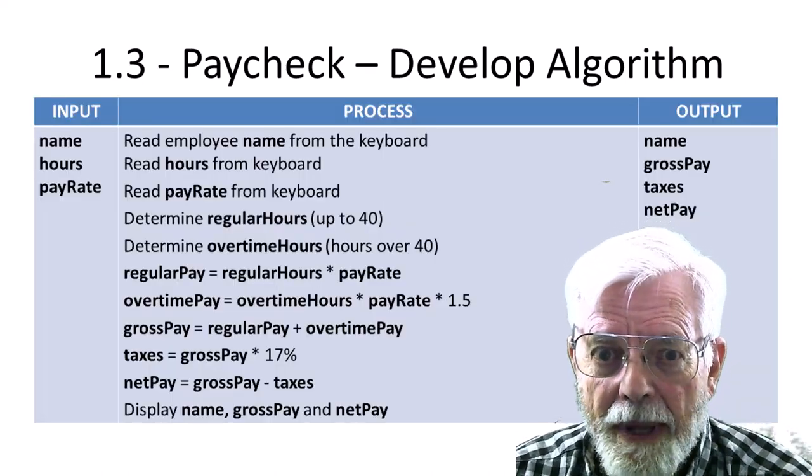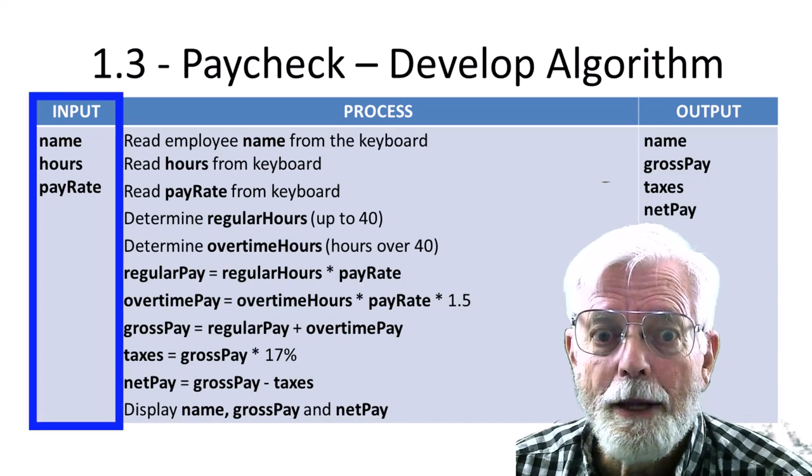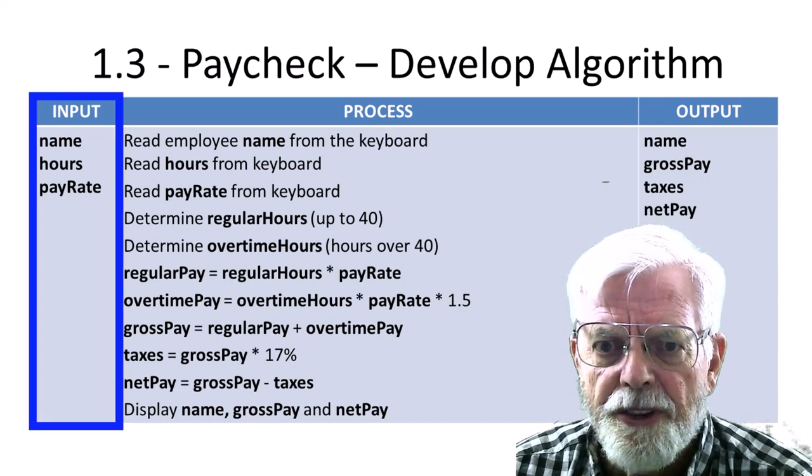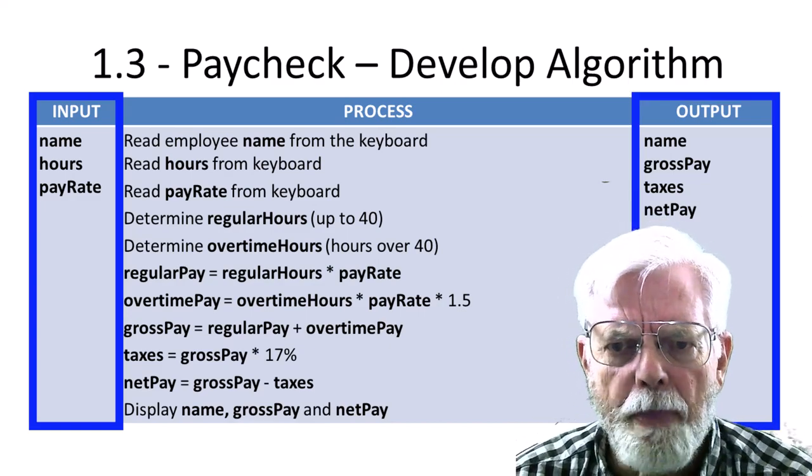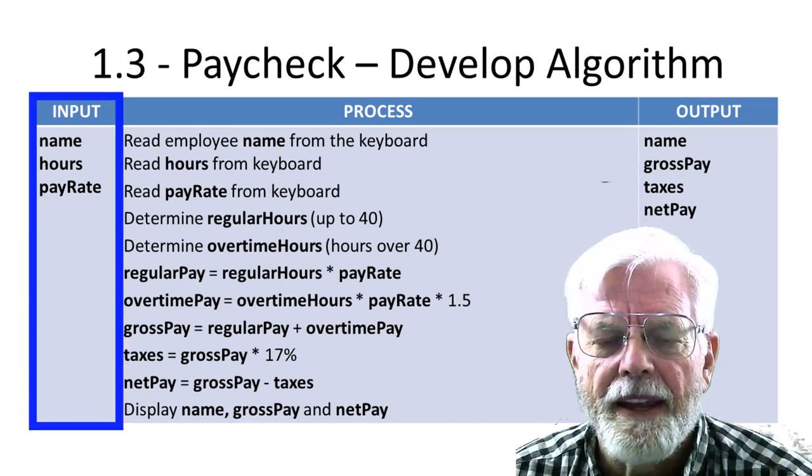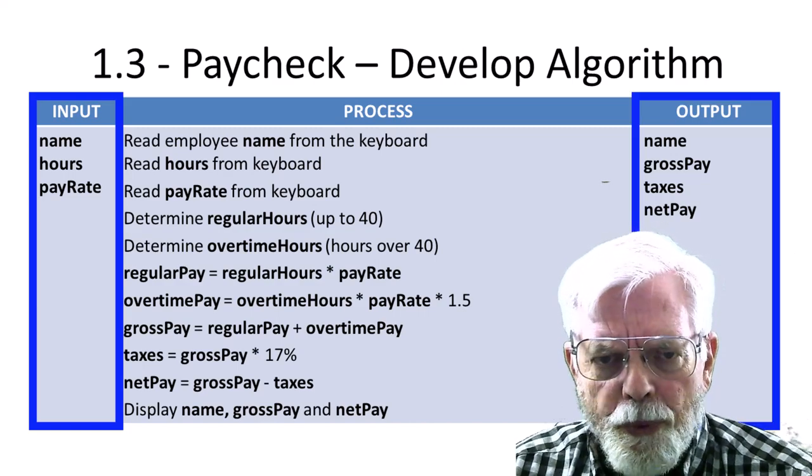In this input process output chart, also called an IPO chart, we want to define the inputs. In this case, it's the name, hours, and pay rate, and the outputs: name, gross pay, taxes, and net pay. First, identify the inputs and outputs. Once we know these, we need to decide how to get from the input all the way to the output.